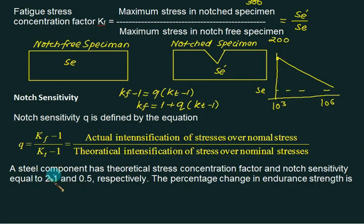So what is given to you. A steel component has a theoretical stress concentration factor KT is equal to 2.1. And the notch sensitivity is Q, is it 0.5? You have to find out the percentage change in endurance strength. It is same as you want to calculate the value of KF. Is it a percentage change? So you have to just calculate KF. Is KF is given by 1 plus Q into KT minus 1? Same formula. So what is KF? Is 1 plus, the value of Q is 0.5, multiplied by KT, KT is 2.1, minus 1, 1.1, 0.55. Is it 1.55. Increase by 55 percent.